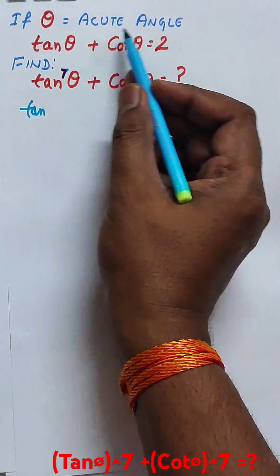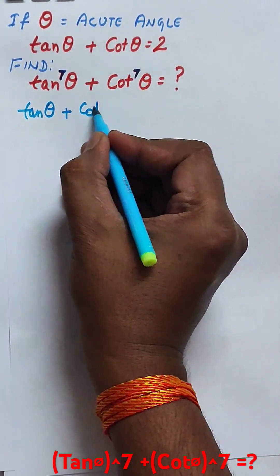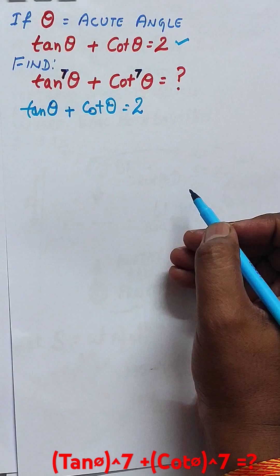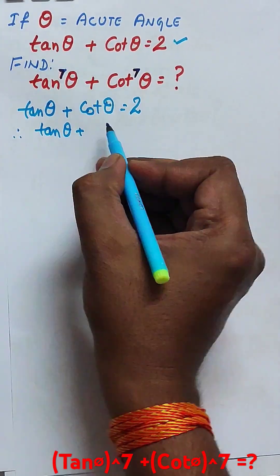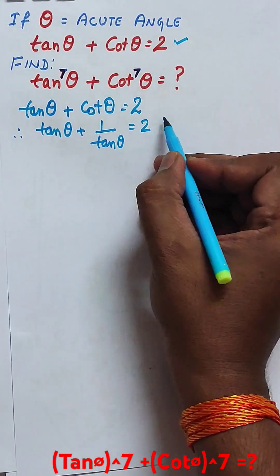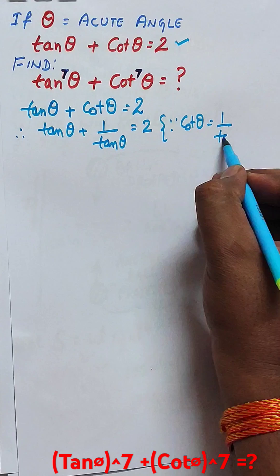In this trigonometry question, it's given that theta is an acute angle and tan theta plus cot theta equals 2. We need to find tan^7 theta plus cot^7 theta.